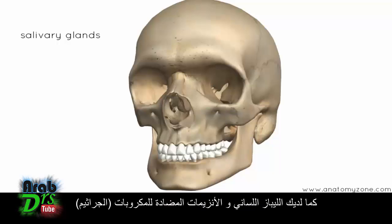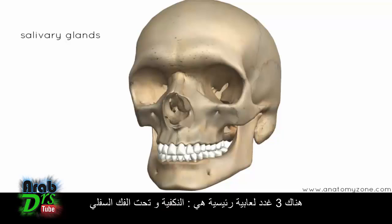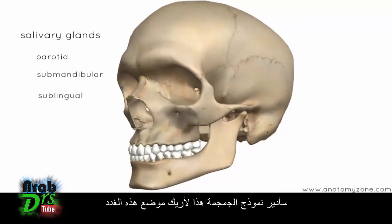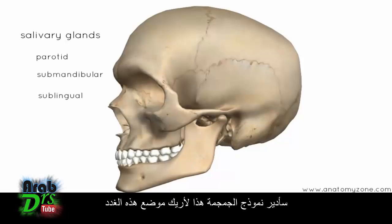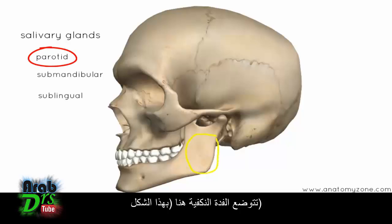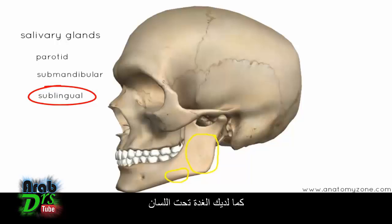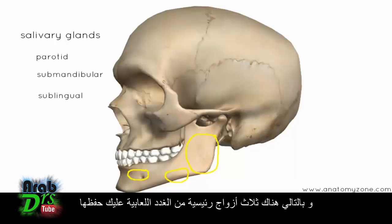You've also got lingual lipase and other antimicrobial enzymes in saliva. There are three major pairs of salivary glands: the parotid, submandibular, and sublingual glands. Rotating the skull model, the parotid gland sits over here, the submandibular gland lies underneath the mandible, and the sublingual gland lies under the tongue. So those are the three main pairs of salivary glands to remember.